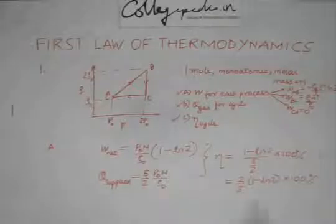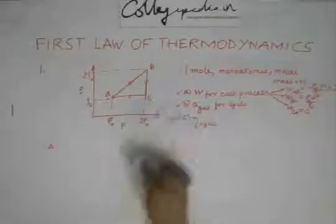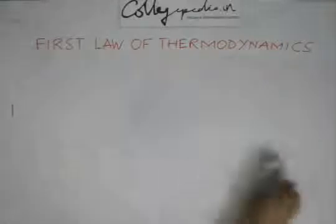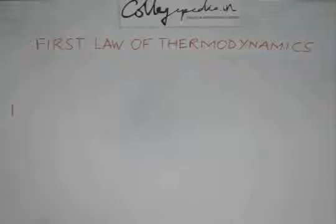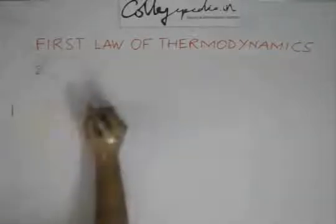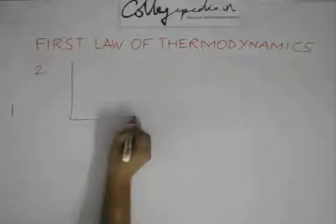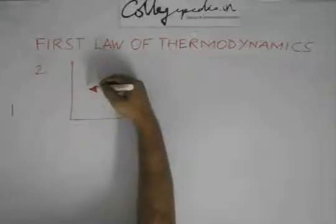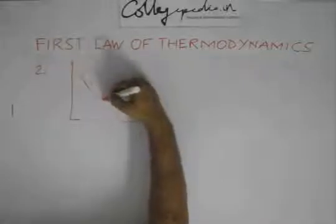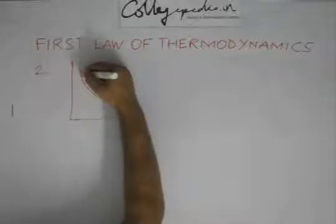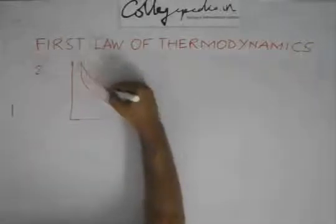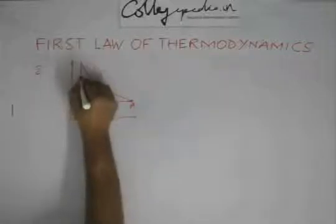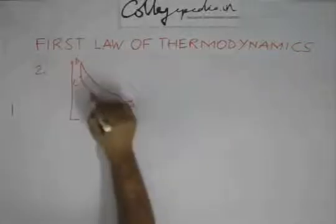Let us look at another problem. In this problem we have given a PV diagram. This is an isobaric process followed by an adiabatic process. This is then followed by an isochoric process. So this is our point A, this is our point B, this is point C, this is point D and back to A. So this is the cycle we are looking at.